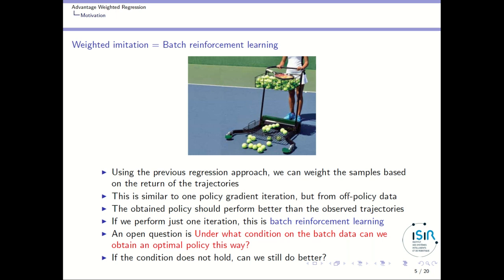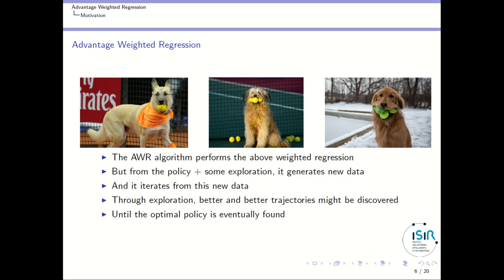If we just perform one iteration of this, this is batch reinforcement learning: we have a replay buffer, we perform one iteration weighting the samples based on the return of the trajectories, we get a new policy and that's it. An open question in batch reinforcement learning is what conditions on the batch data allow us to obtain an optimal policy this way. If this condition does not hold, can we still do better? Yes — the idea is that we can do more than one iteration.